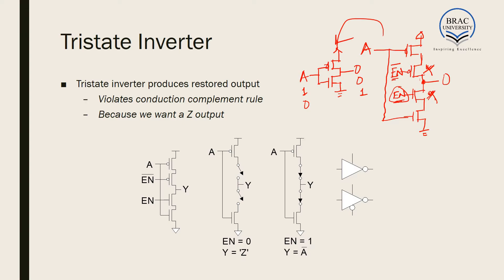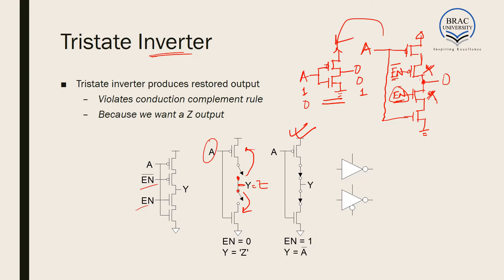If both transistors are on, they can be considered short circuits and the circuit looks similar to a basic inverter circuit. But if both transistors are off, the output is connected to something floating — in no way connected to VDD, and in no way connected to ground — so the output is floating. So in the case of tri-state inverters, using the tri-state and enable pins, we can actually control whether we want to pass the input to the output or keep the output floating.